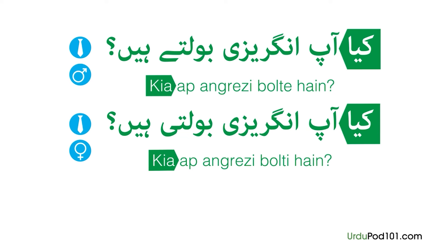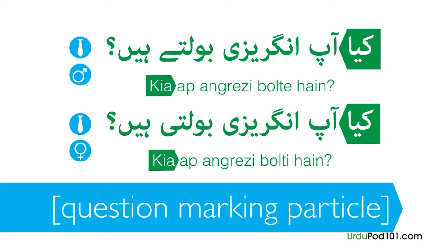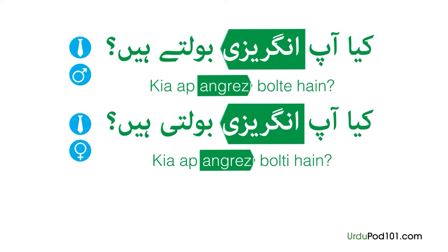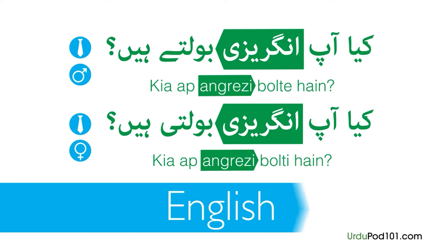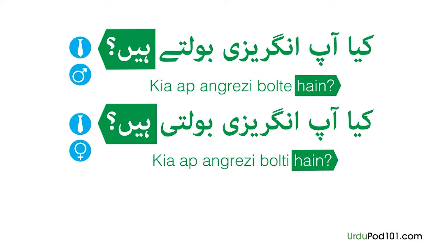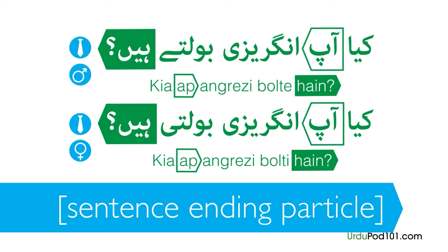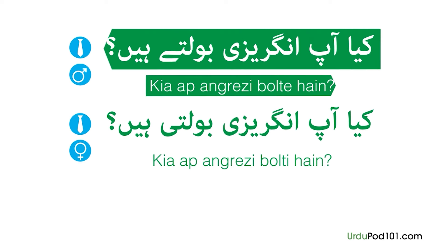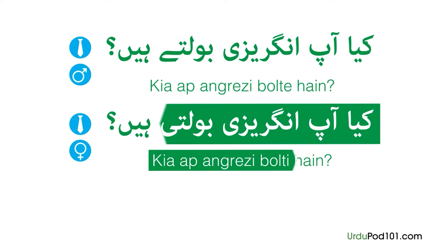First we have Kya — a question marker which comes at the beginning of the sentence. Next is Aap — the respectful word for 'you,' used in formal situations. You should always use it with people you don't know or with elders. Next we have angrezi, which means 'English.' Next is the verb bolte, meaning 'to speak,' used when the subject is masculine. We use bolti when the subject is feminine. And finally we have hain — a sentence ending particle used with aap.